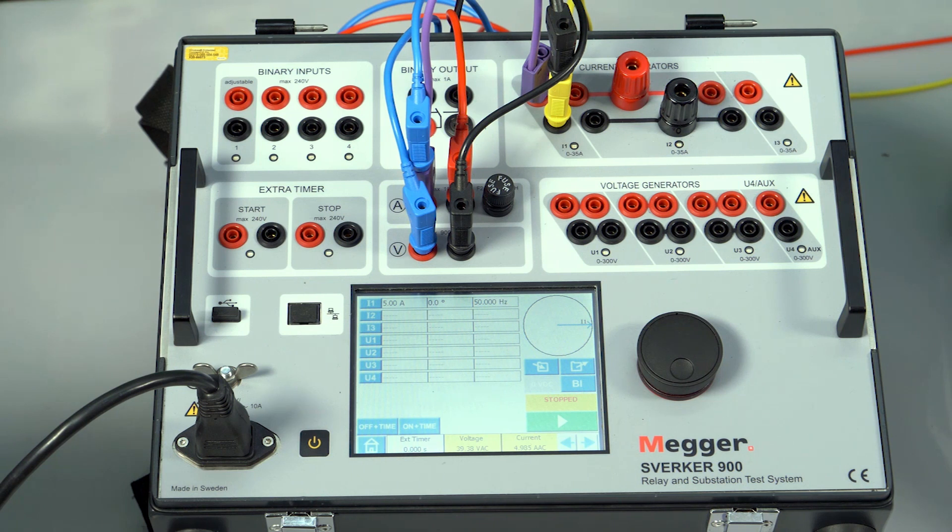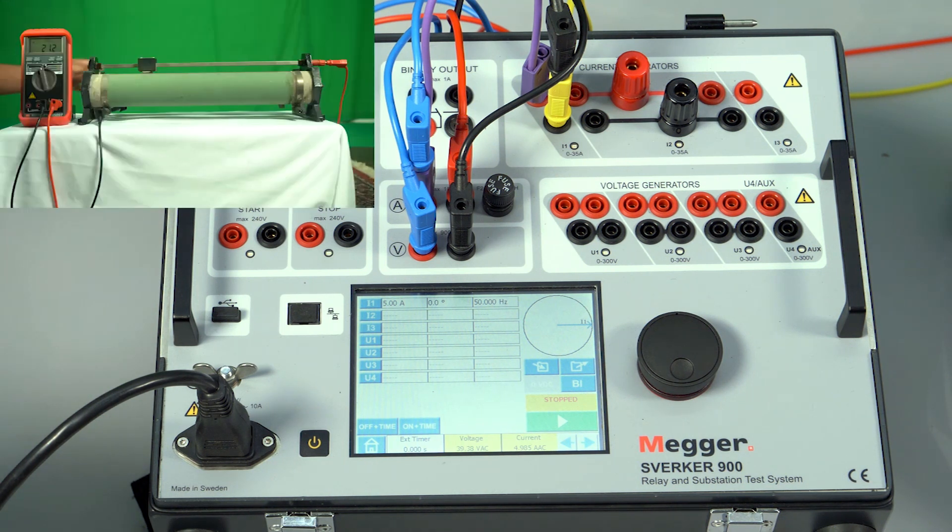The current generators have a burden of 250 VA when operated independently with a compliance voltage of 50 volts. To verify the same, let us connect to 10 ohms resistance and inject 5 amps current.